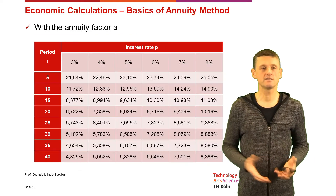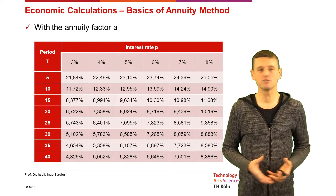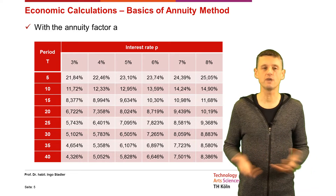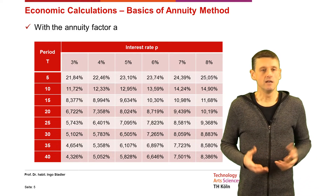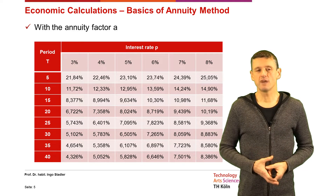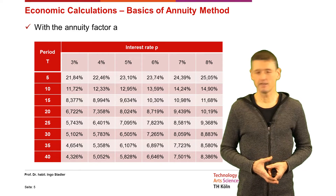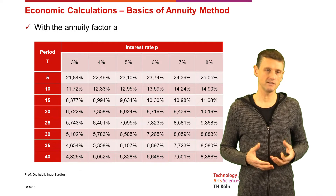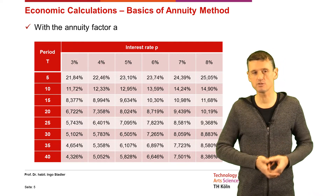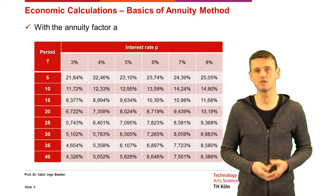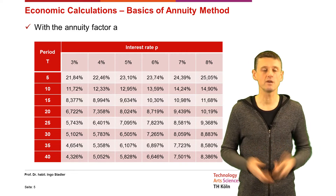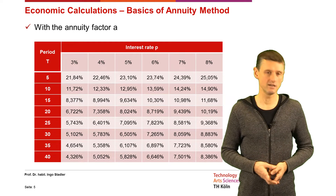In that table we see the annuity factor for different interest rates P from 3 to 8% and for different periods T ranging from 5 to 40 years. The annuity factor is always bigger than the interest rate because within the given number of years we not only have to pay interest, we also need to pay back the loan.